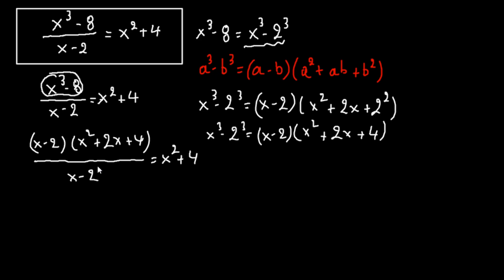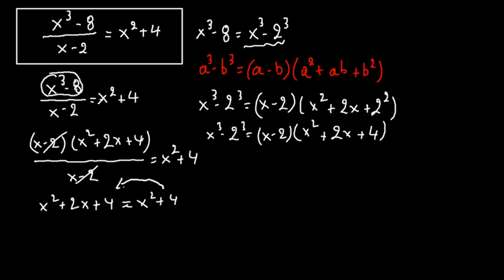Here, the x minus 2 terms cancel. So we have x squared plus 2x plus 4 equals x squared plus 4. Bringing terms to one side: x squared plus 2x plus 4 minus x squared minus 4 equals 0.